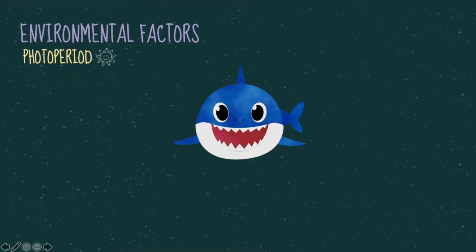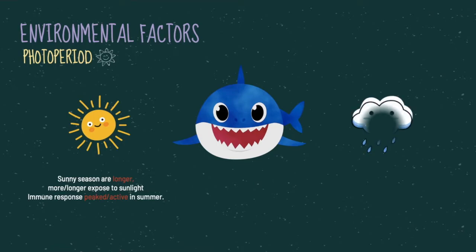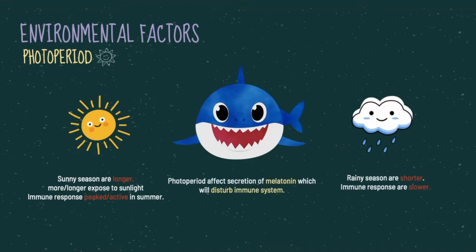Usually the sunny season is longer, so Nawal is exposed longer to sunlight and her immune response is bigger and more active in summer. However, rainy seasons are shorter, so her immune response is slower. This shows that photoperiod affects the secretion of melatonin, which disturbs the immune system. Melatonin is a hormone that synchronizes physiological events such as food intake, growth, and reproduction.